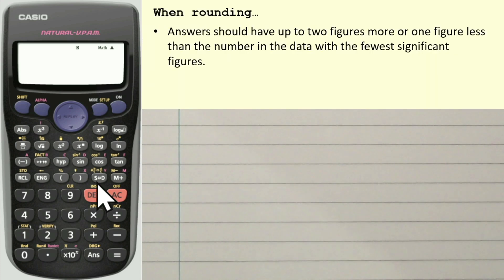This is the first rule when rounding. It says answers should have up to two figures more, or one figure less, than the number in the data with the fewest significant figures. Now that's how it's written for teachers who are marking your exam. So answers should have up to two figures more, or one figure less, than the number in the data with the least significant figures, or the fewest significant figures.